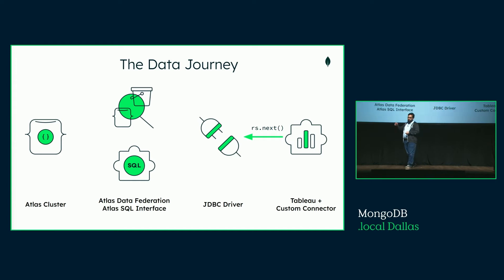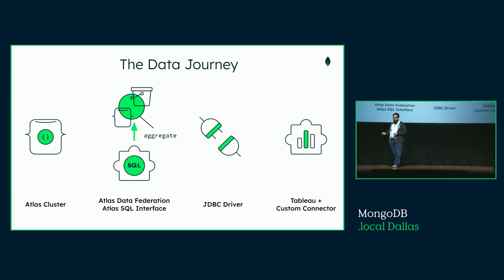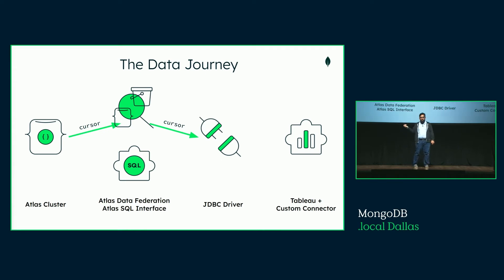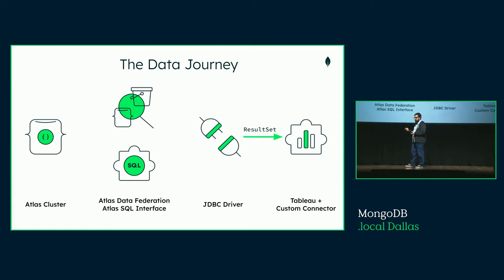Now the BI tool will iterate on the result set cursor, going back to the JDBC driver, knowing what the schema looks like, and basically asking for data using the $SQL aggregation we just talked about. That goes into the aggregation pipeline and then into the larger scheme of running the query and getting the data, which it pulls out of the Atlas cluster. Once the data comes back, the result is passed back through Atlas Data Federation, back to the driver, which exposes it directly back to Tableau. What we've seen here is an end-to-end process of how each time we need data inside Tableau, we can now natively call it out of an Atlas SQL database.